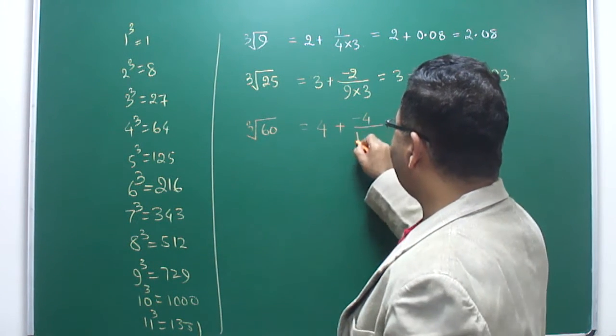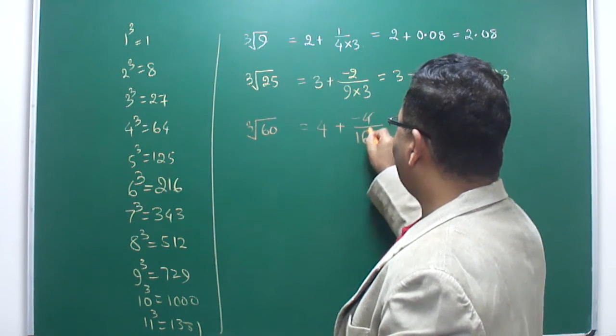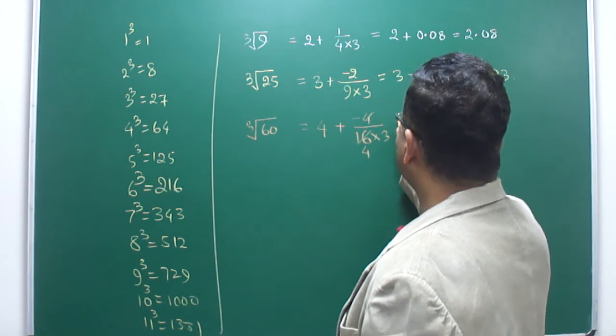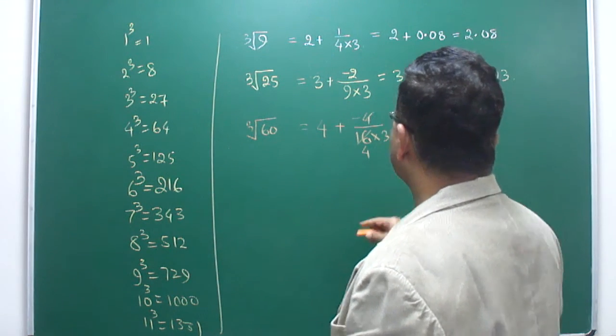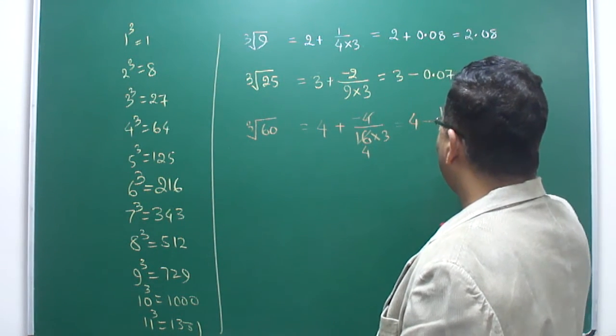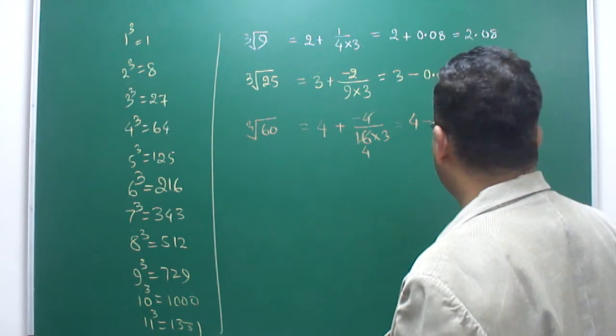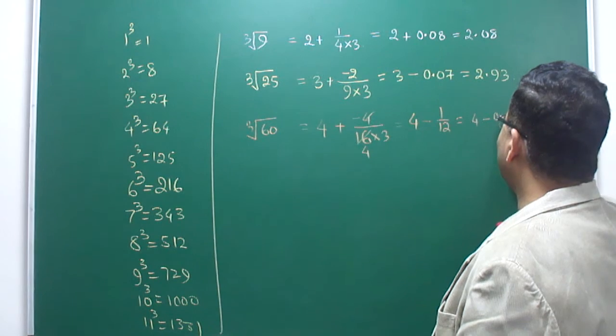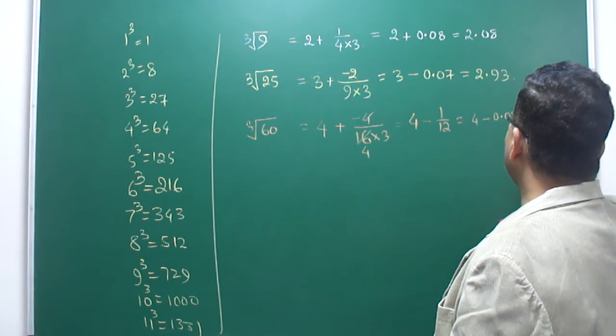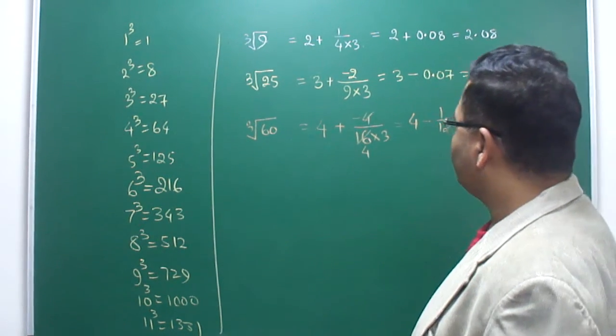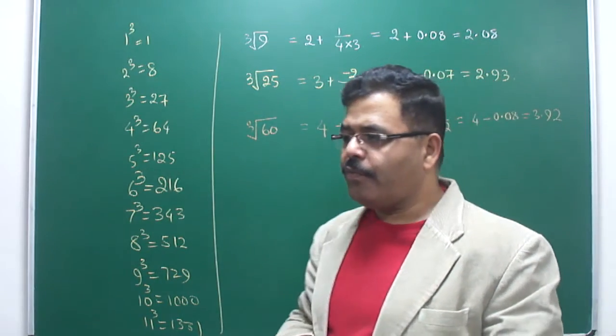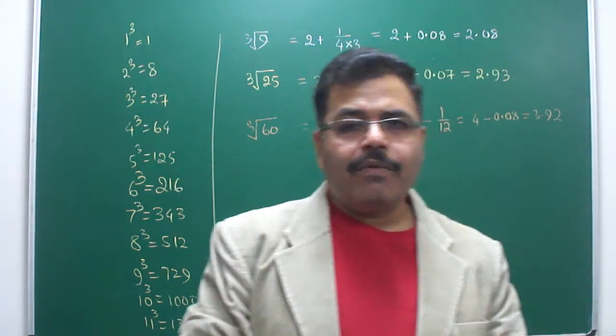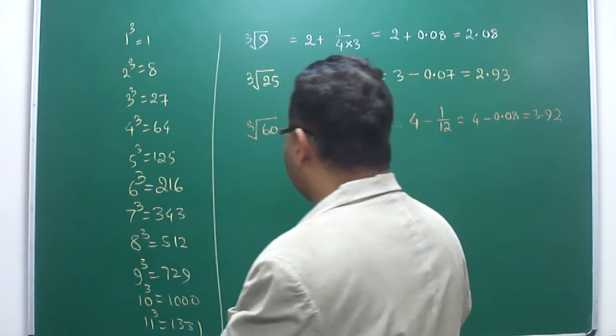Now, the square of this number is 16, and multiply by 3. So 4 minus 1/12. 1/12 can be calculated orally as 4 minus 0.08, that is 3.92. That will be the answer.